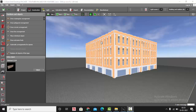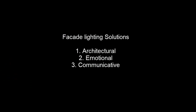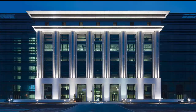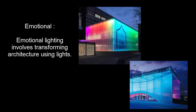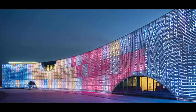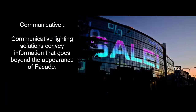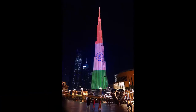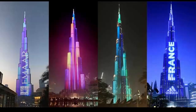There are three lighting solutions for facade lighting. The first is architectural lighting, where facade elements are accentuated and the natural structure of the facade is emphasized. The second is emotional lighting, which involves transforming the architecture by using lights. The third is communicative lighting, which conveys information that goes beyond the appearance of the facade — it's not just illumination but delivering information to people through the lighting.